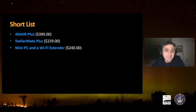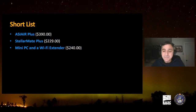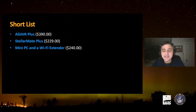I had three options to decide between: the ASIAIR Plus, Stellar Mate Plus, or a mini PC and a WiFi extender. The ASIAIR Plus costs around $400. It's a dedicated smart WiFi controller for your telescope, imaging rigs, mount, filters, everything. However, there were some missing features — more flexibility needed for alignment, filter management, and sequencer. And above all, if you want to use a camera other than a ZWO, you can't.